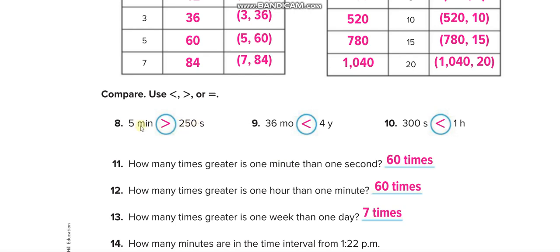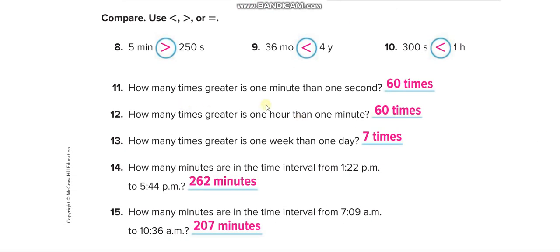Comparing: 250 seconds or 5 minutes? 5 minutes equals 300 seconds, so 5 minutes is more. 4 years or 48 months? 4 years equals 48 months, so 48 months are not more — they are equal. 300 seconds or 1 hour? One hour has 60 minutes and many more seconds, so 1 hour is more. How many times greater is 1 minute than 1 second? 1 minute equals 60 seconds, so 60 times. 1 week equals 7 days, so 7 times.